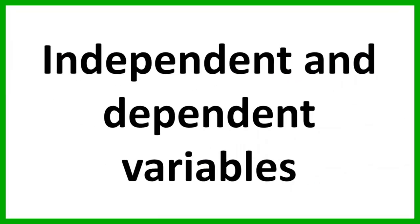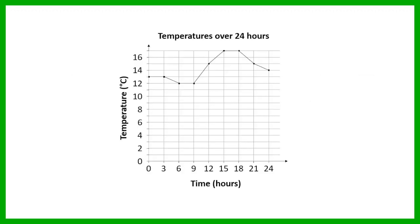When you draw a graph, you are making a graphical representation of the relationship between two variables. One of the variables is what we call the independent variable. It is the variable that is going to be on the horizontal axis, and it is not affected by changes in the other variable.